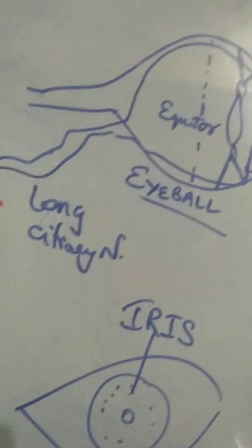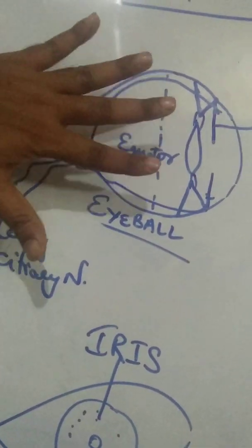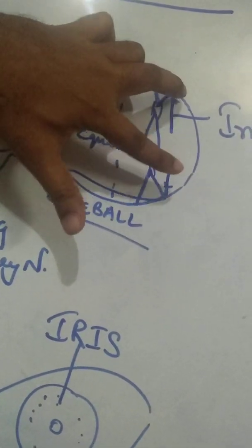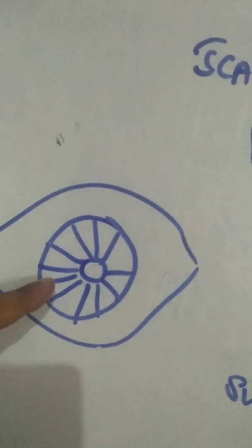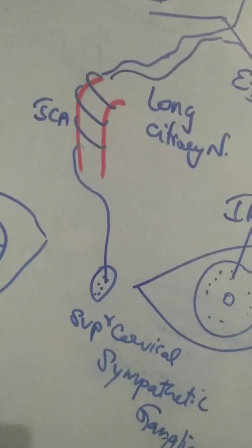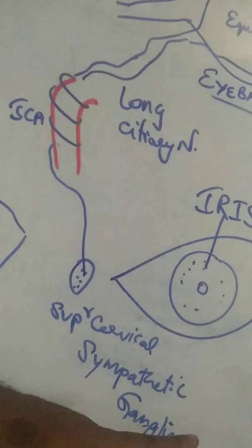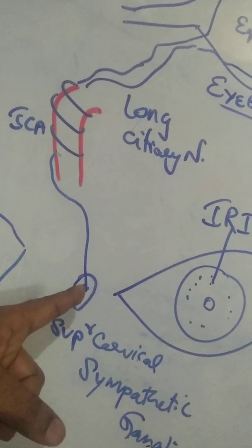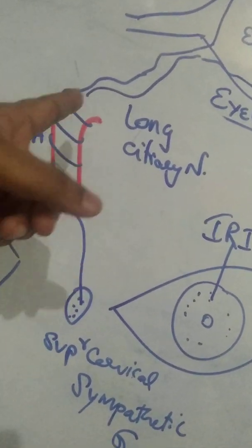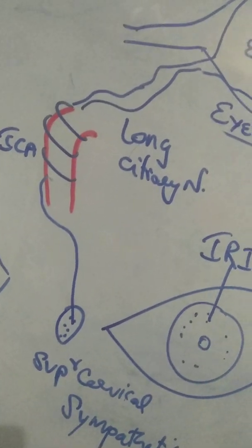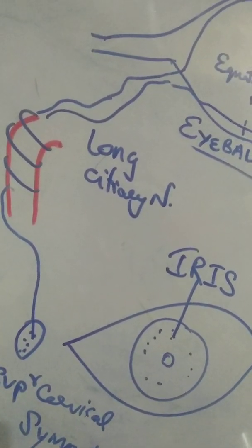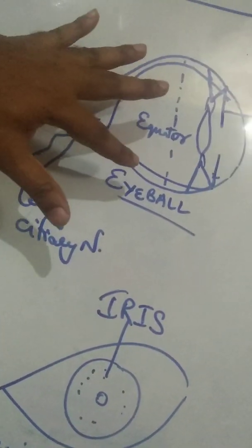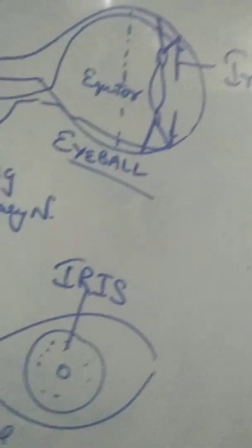In the cranial cavity, the plexus gives off the long ciliary nerves. These long ciliary nerves pierce the sclera of the eye around the optic nerve and travel just beneath the sclera to reach the iris and supply the dilator pupillae muscle. To summarize: lateral gray horn of T1 → superior cervical sympathetic ganglia → post-ganglionic fibers wind around the internal carotid artery as a sympathetic nerve plexus → long ciliary nerves pierce the sclera → reach the iris.